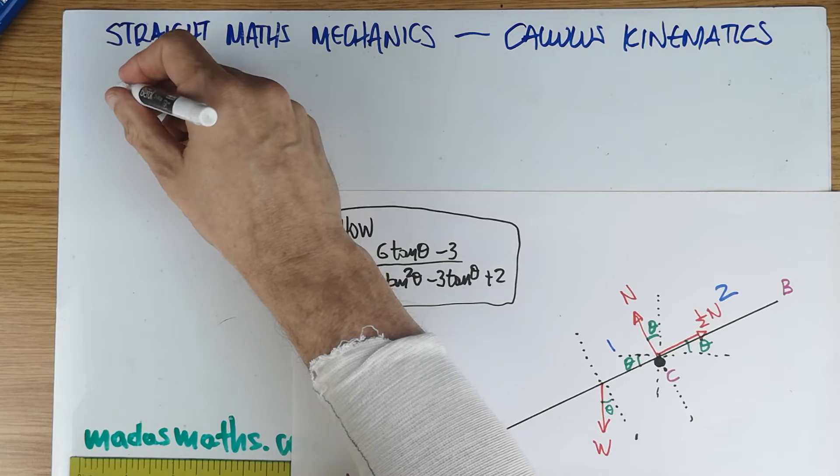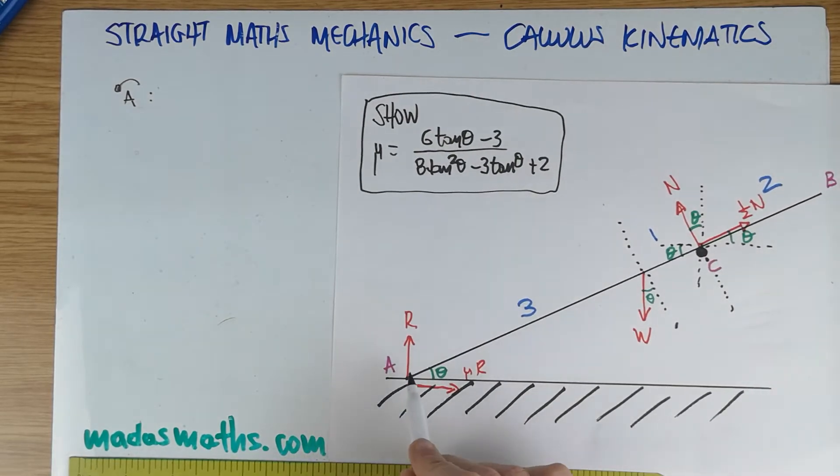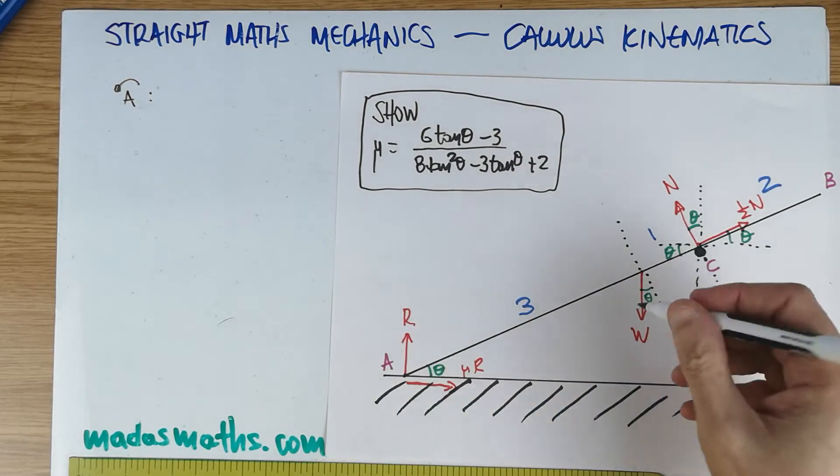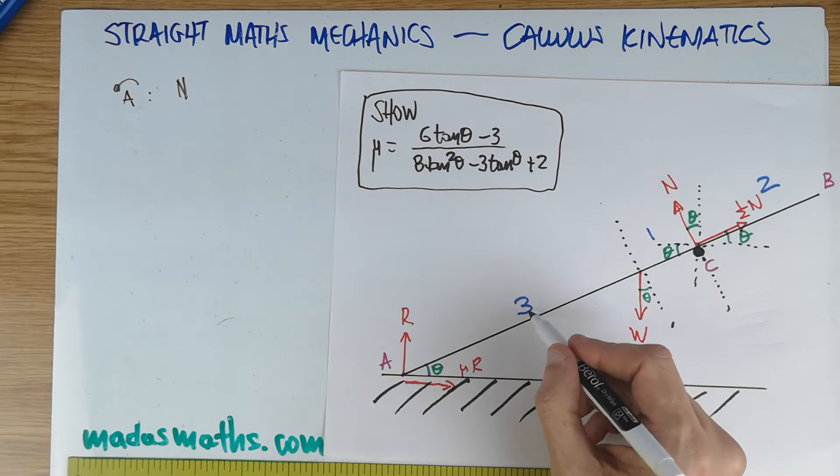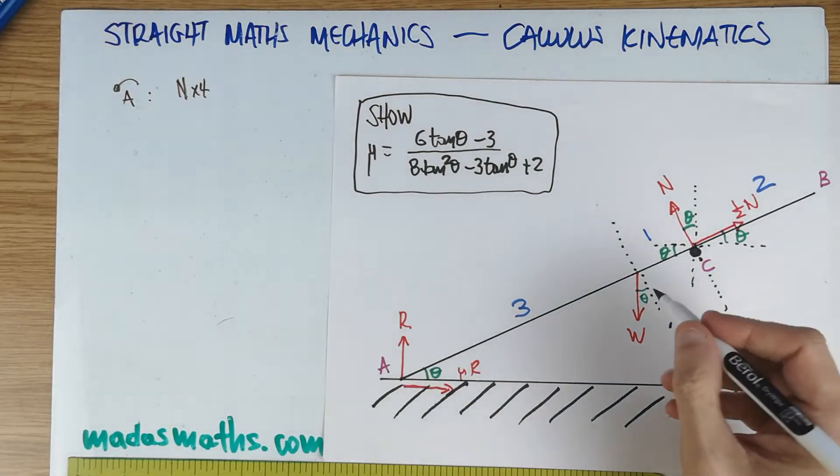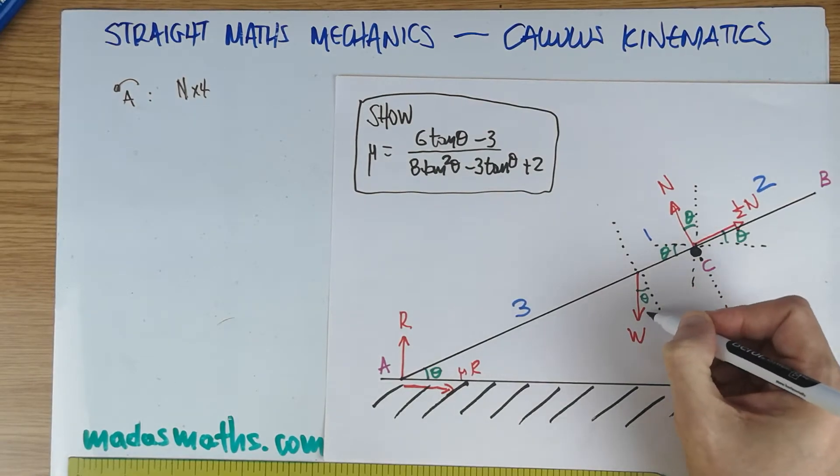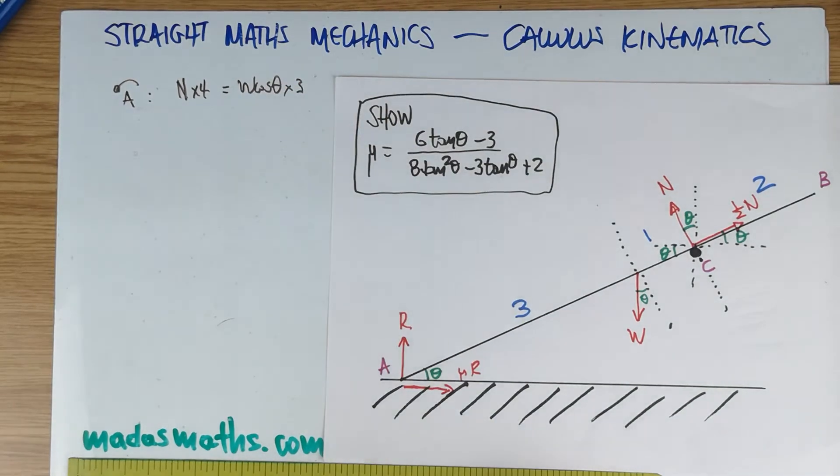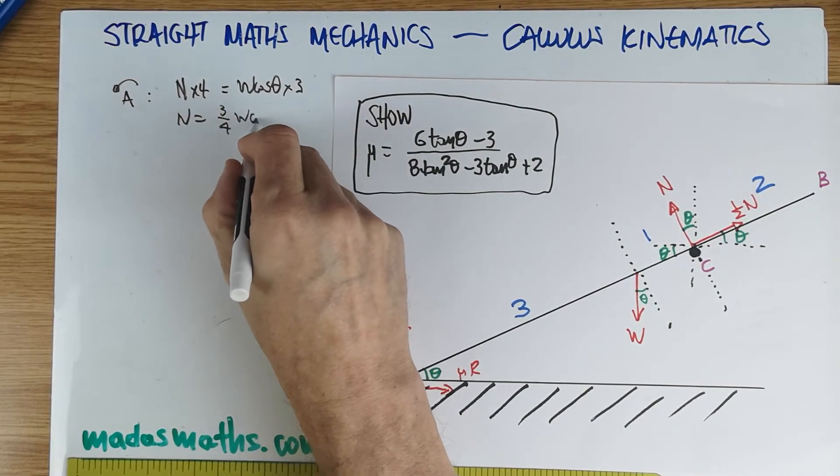This says moments about A. The R and the μR have no moment because they're going through the pivot. There is another force that has no moment. It's the half N because the line of action of this force is also going to the pivot. All I'm going to have is just purely N times, because this is perpendicular, I don't need to resolve it, times four from the pivot, is equal to, when I split this W, it's going to have a component there, which has no moment, but this is at right angles and this will have a component. W cos θ times three from the pivot.